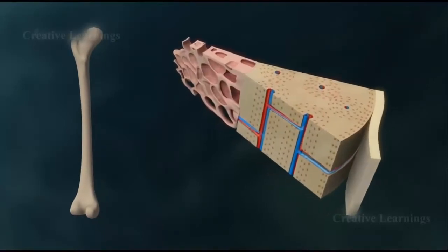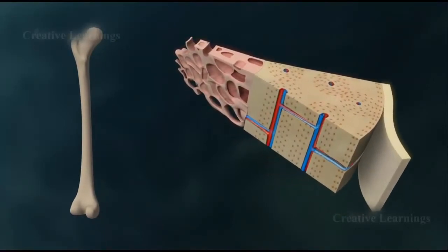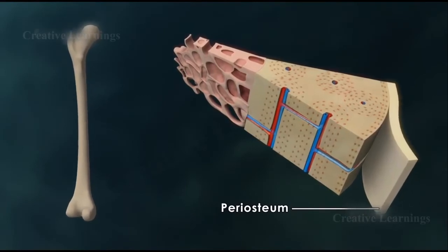All bones are surrounded by a tough layer of connective tissue known as the periosteum. It is through this tissue that blood vessels pass, carrying oxygen and nutrients to the bone.